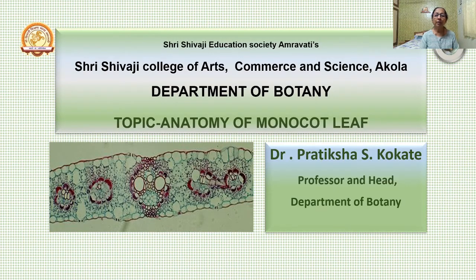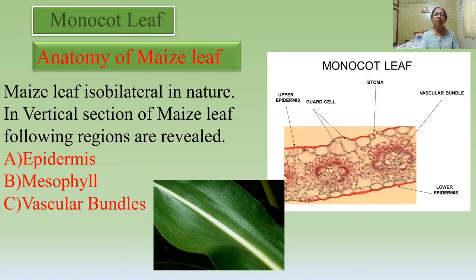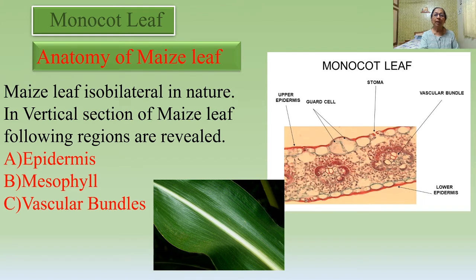Monocot leaves have the characteristic of parallel venation. To study monocot leaf anatomy, we will see the example of maize. Maize leaves are anatomically isobilateral in nature. Isobilateral leaves are placed vertically on the stem so that both surfaces — dorsal and ventral — equally face sunlight for the photosynthesis process.